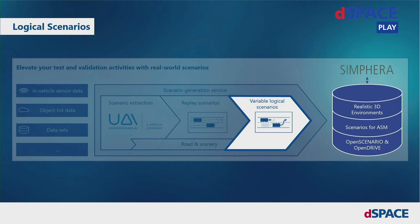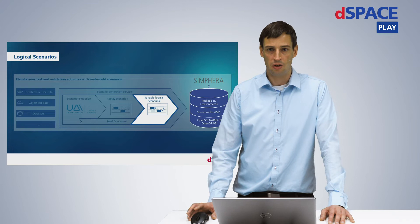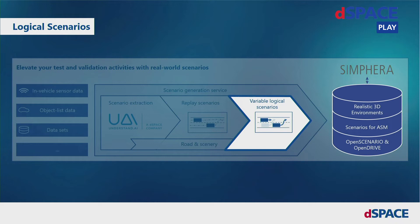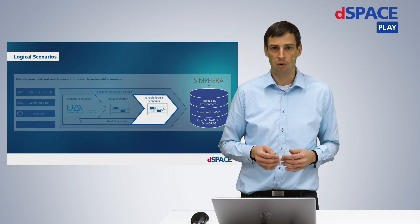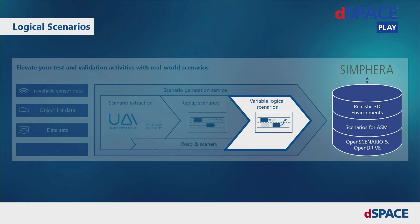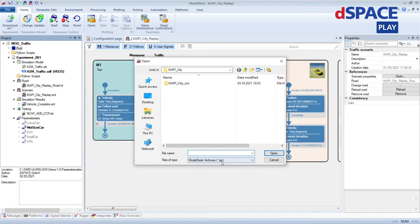Therefore, the scenario generation service contains a further step to create variable logical scenarios. For creating logical scenarios, we use the trajectories and detect different behaviors of the individual actors in the data. As part of the scenario detection, we identify relevant situations including the timeframe where they occur in the raw data, and we detect the involved participants for each scenario, for which we can create parameterizable activities. We also extract the concrete parameters of this particular scenario so that a concrete instance of the logical scenario is available. We have generated a logical scenario from this example, so let's load it into ModelDesk.